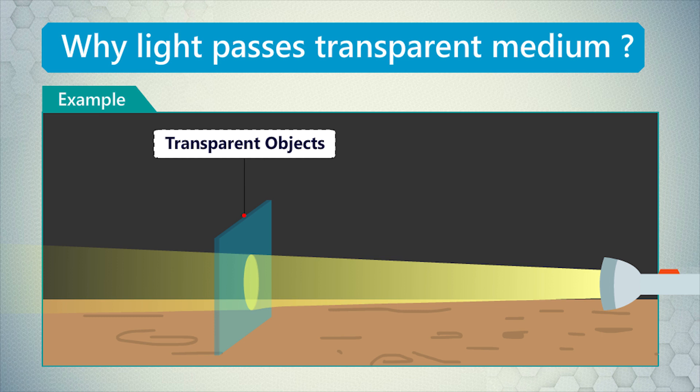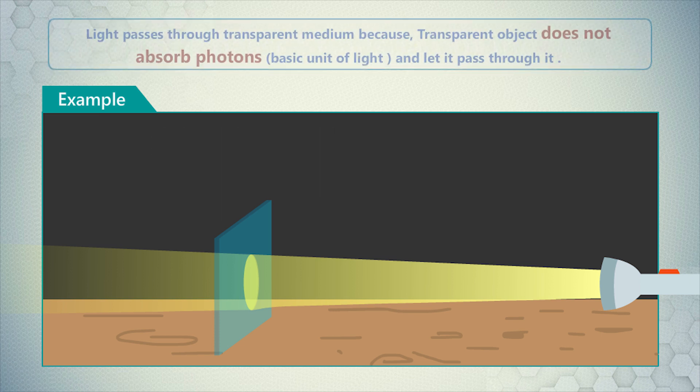Transparent objects are the objects which allow light to pass through it. Through a transparent object we can see, like water, air, glass, etc. Light passes through transparent medium because transparent objects do not absorb photons, basic units of light, and let it pass through.